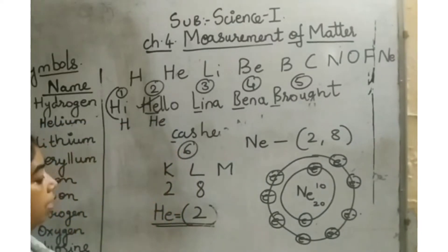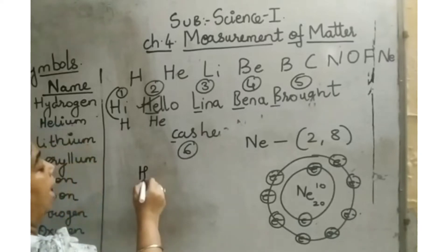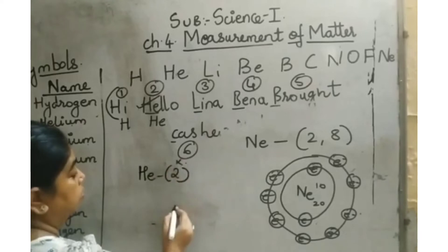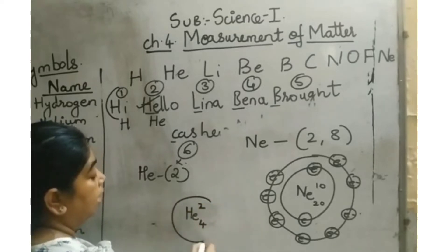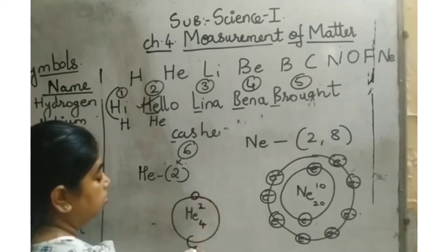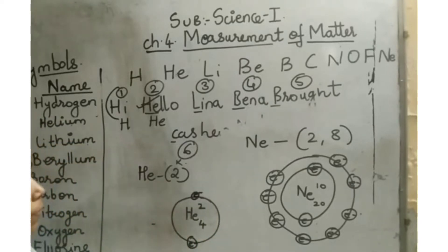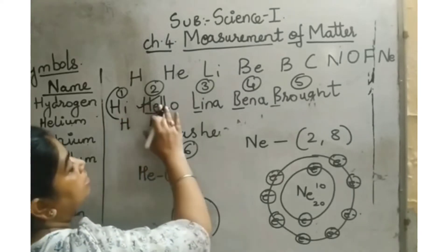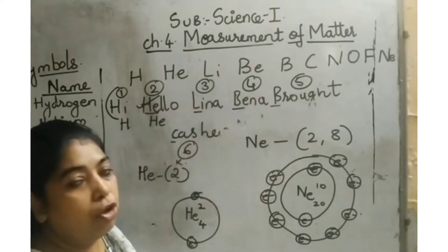The same way we can draw the structure for helium. Helium has atomic number 2 and atomic mass number 4, so the K-shell has 2 electrons. It has only 2 electrons in its outermost orbit and it is stable. In this way, we can remember the atomic number as well as the electronic configuration.